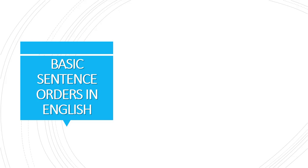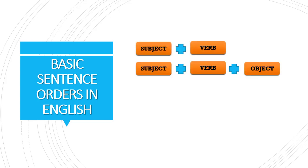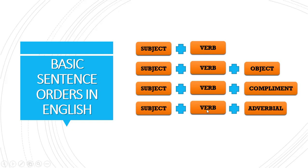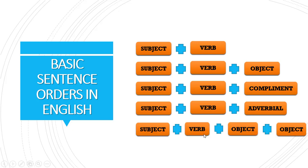There are five basic sentence structures in English. First: subject plus verb. Second: subject plus verb plus object. Third: subject plus verb plus complement. Fourth: subject plus verb plus adverbial. Fifth: subject plus verb plus direct object plus indirect object. Let's look at each one.